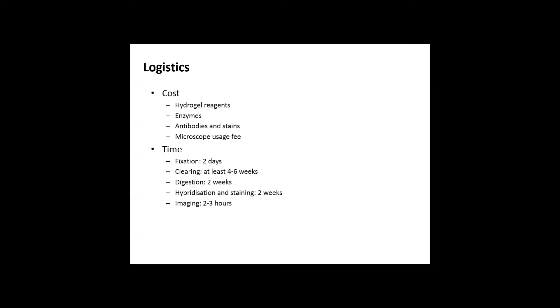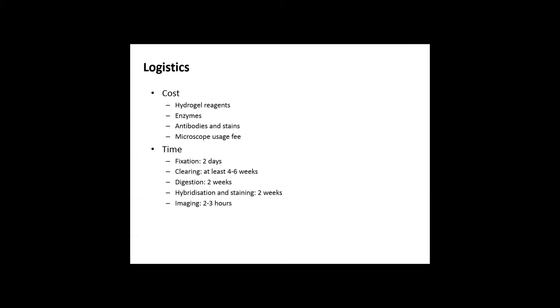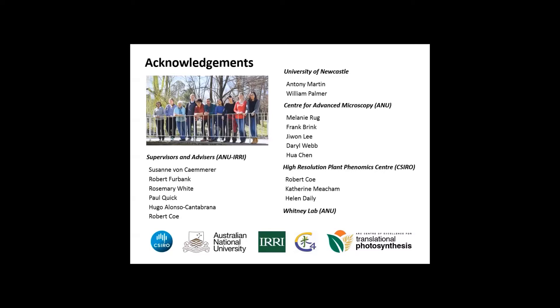Clearing takes at least four to six weeks, depending on the rigidity of your tissue. Digestion usually took me two weeks. Hybridization and staining another two weeks. Imaging takes two to three hours depending on the step and resolution you want. Since I'm working with a nanostructure I want it really well resolved. These are the people I want to thank: the von Caemmerer Lab, my supervisory panel guys from Newcastle who published the paper, the Advanced Microscopy Center in both ANU and CSIRO, and Meath's Lab for continuous use of the vacuum.